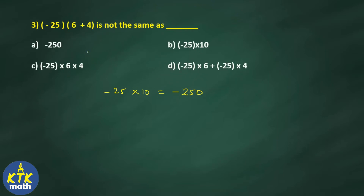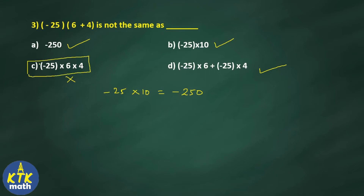Checking the options: here you get minus 250, here also minus 25 into 10 gives minus 250. But option C gives minus 25 into 6, which is minus 150 — this does not equal minus 250. Option C represents the distributive property incorrectly applied. Since the question asks which is NOT the same, option C is the correct answer.